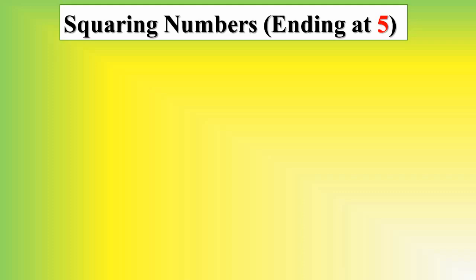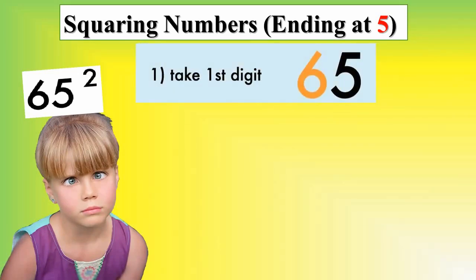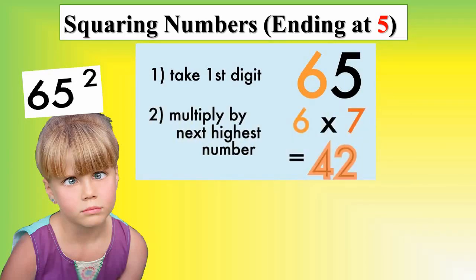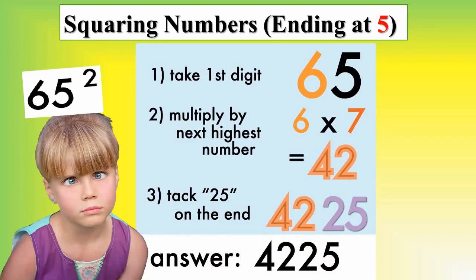As you see in the picture, we are squaring 65. Step 1: Take first digit, here is 6, multiply by next highest number. The next highest number is 7, so 6 times 7 equals 42. The next step and the final step, we take 25 on the end. We had 42 added by 25, so we have the answer here: 4,225. So easy.